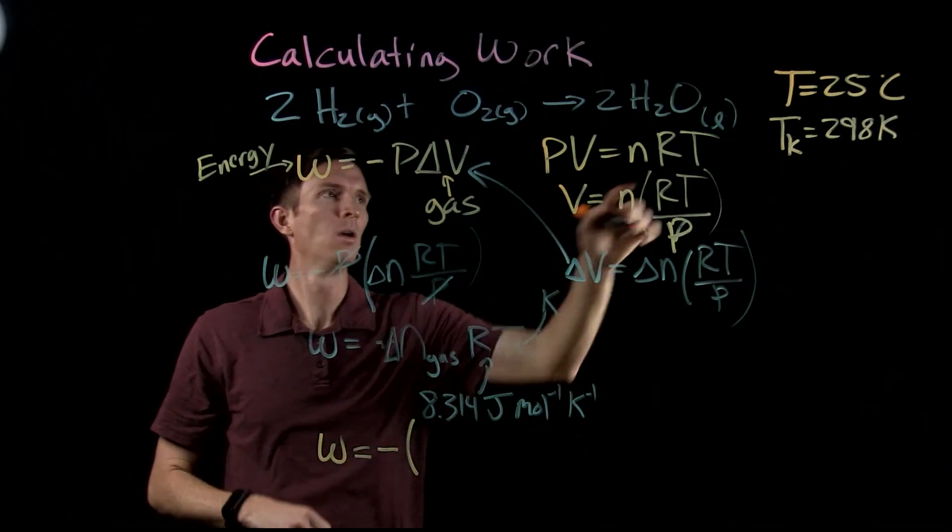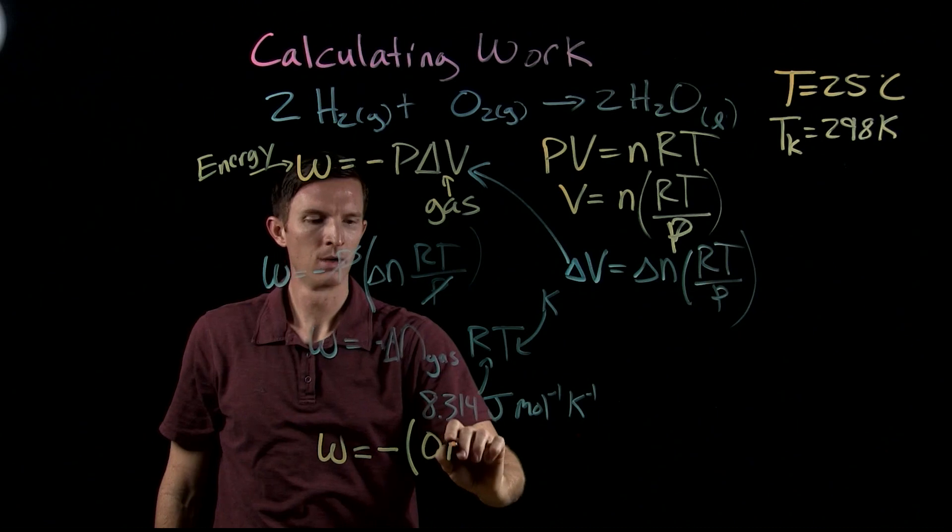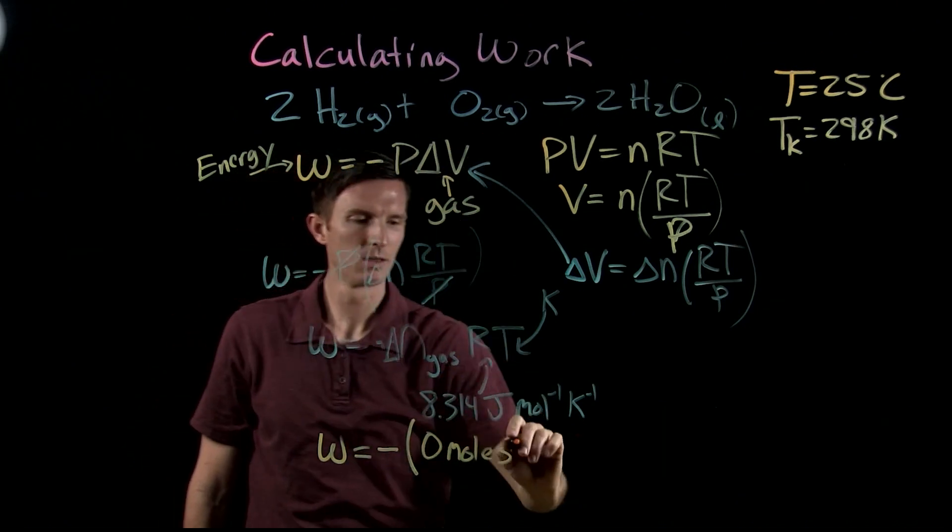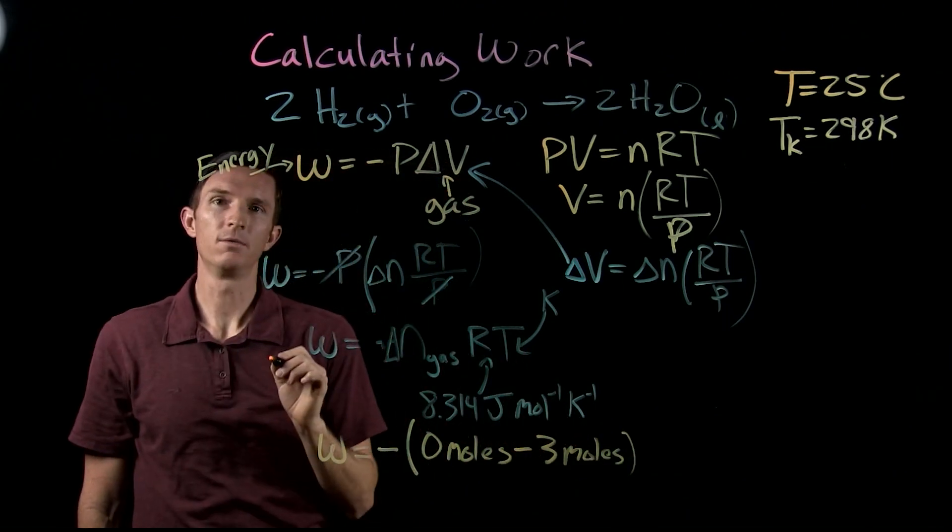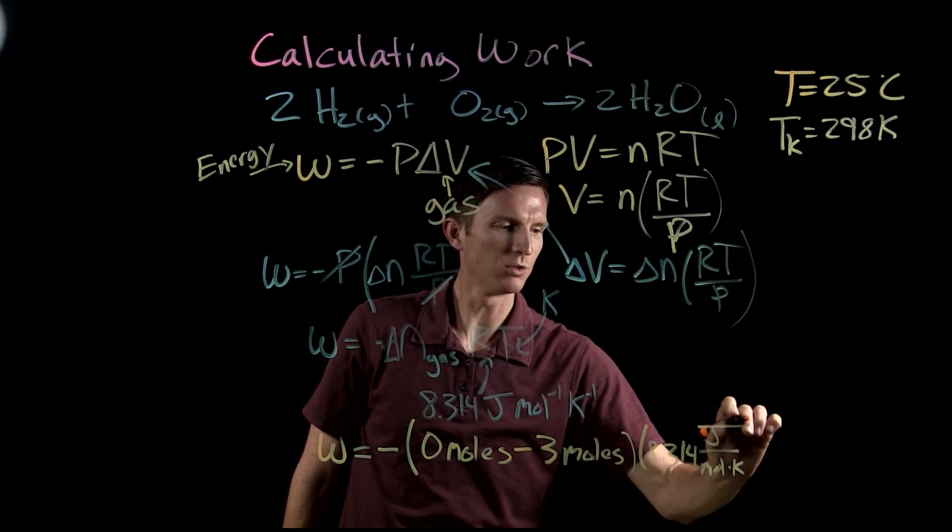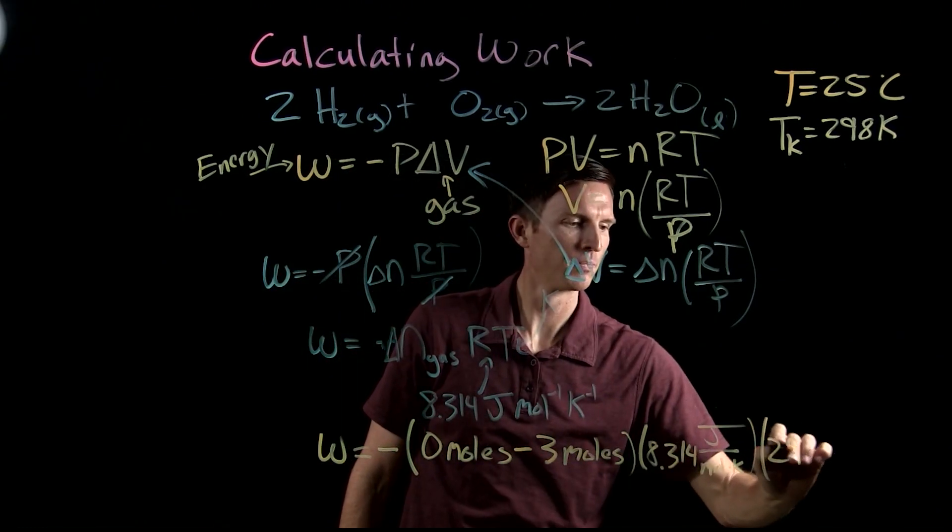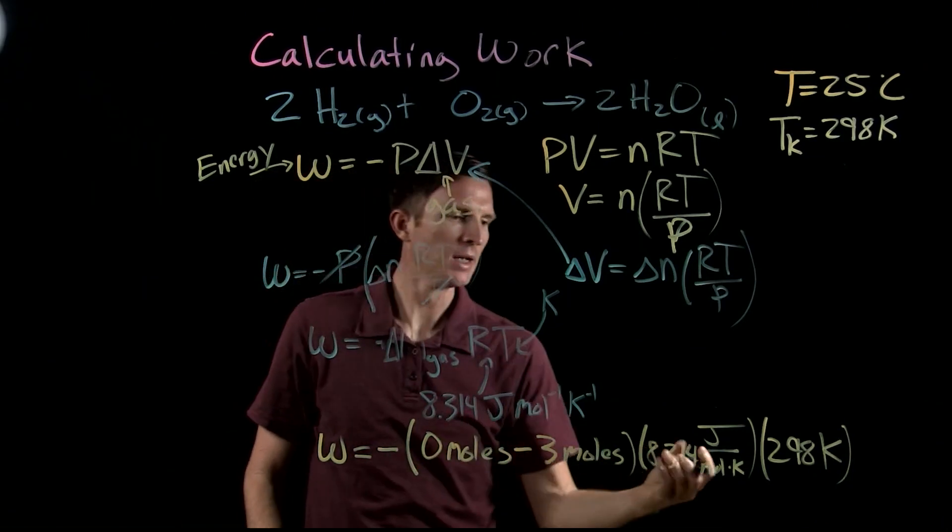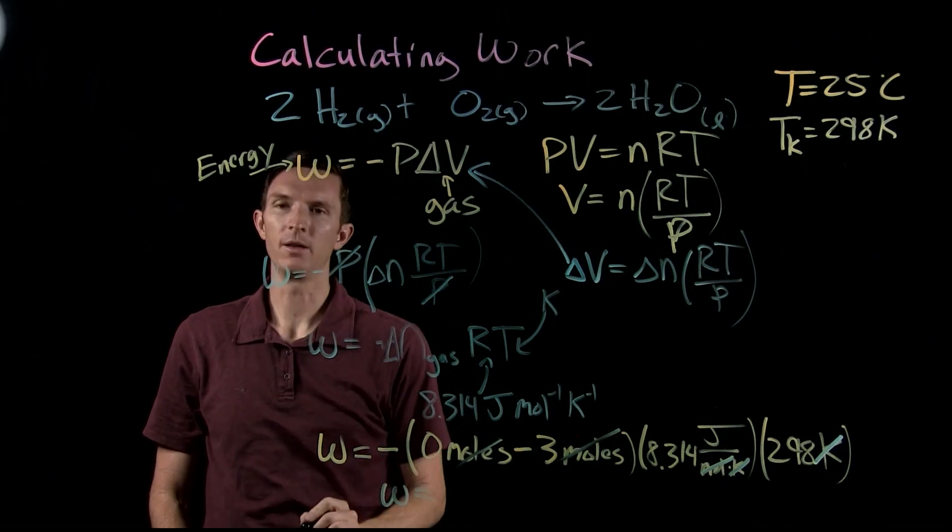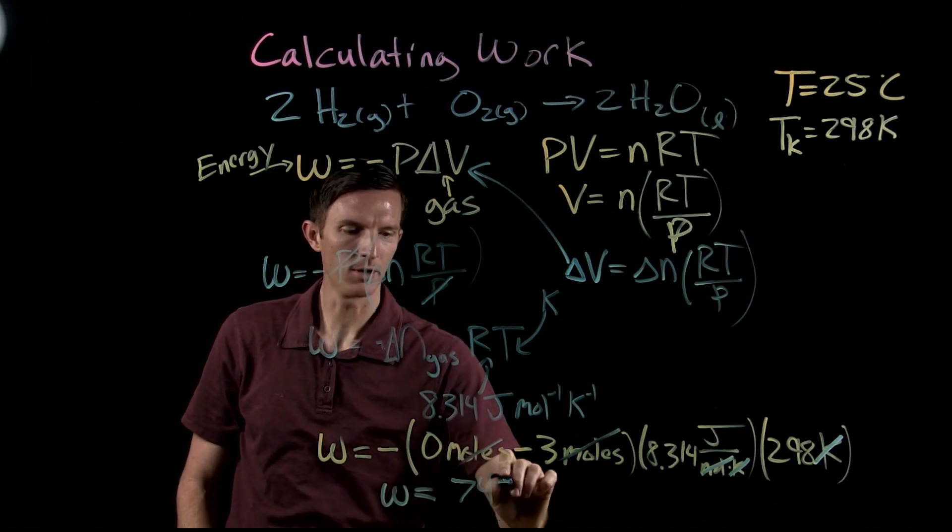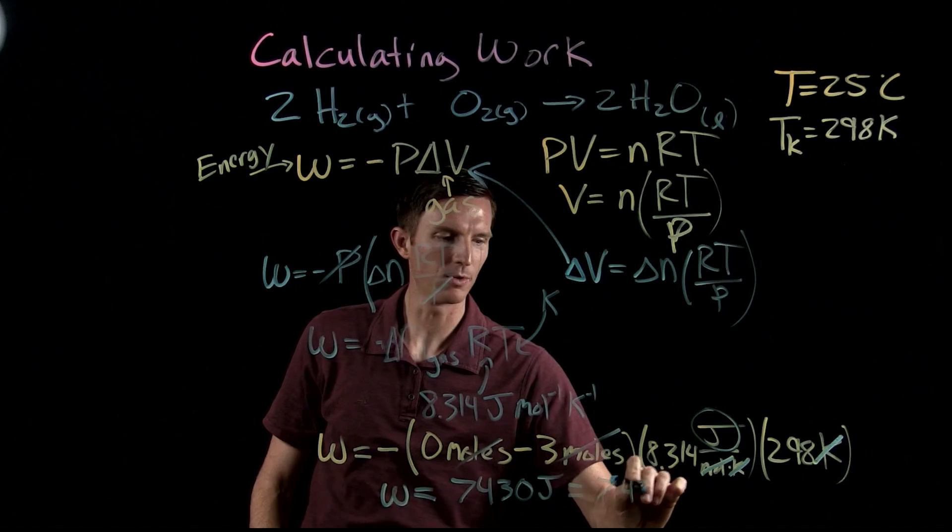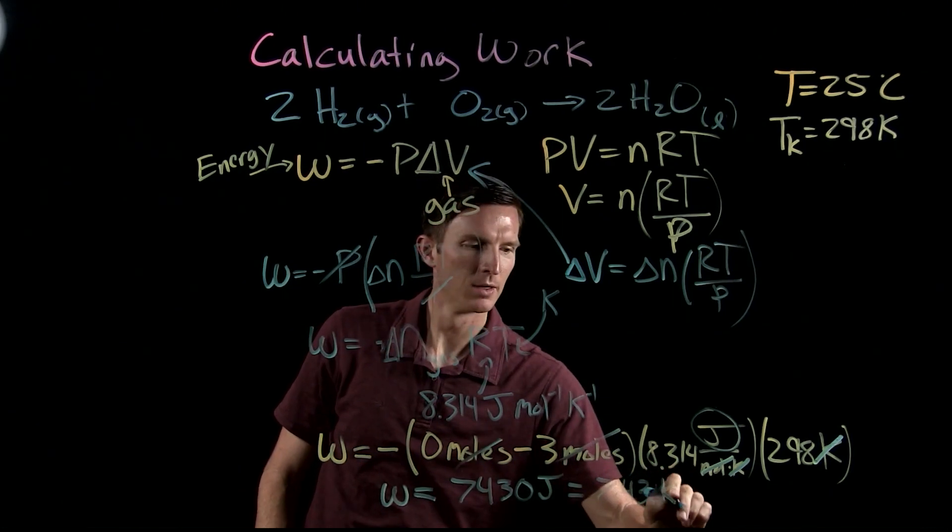products minus reactants. Well, this is a liquid, so that would mean we have zero moles of gas as a product. Those two moles are a liquid. Here we have one plus another two moles of gas as a reactant, and then we multiply that by our gas constant, 8.314 joules per mole Kelvin, and then we can multiply that by our temperature, 298 Kelvin. We go back and we see our units cancel out, our moles cancel out, and we can calculate what the work would be, and this is equal to 7430 joules, or we could say it's 7.43 kilojoules.